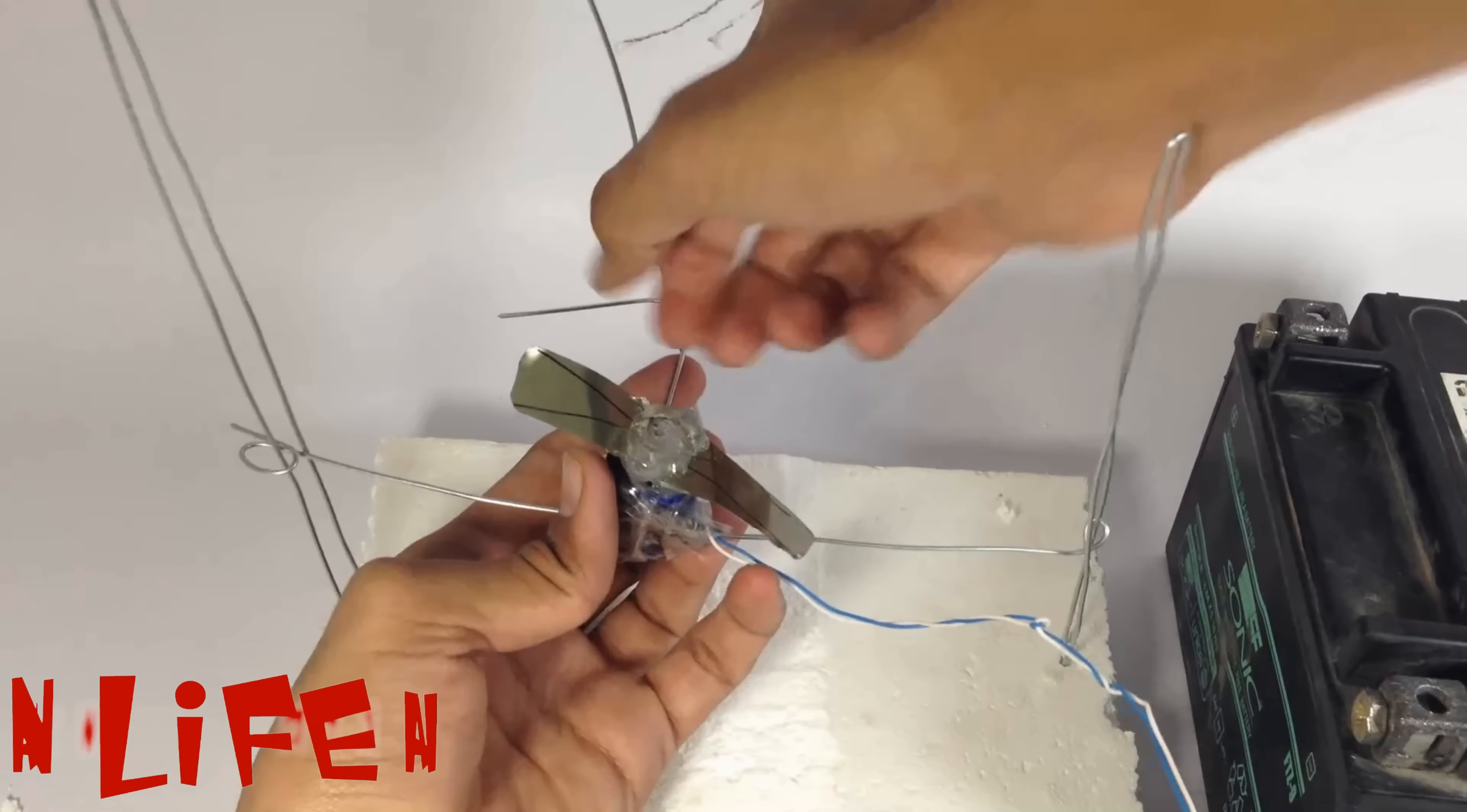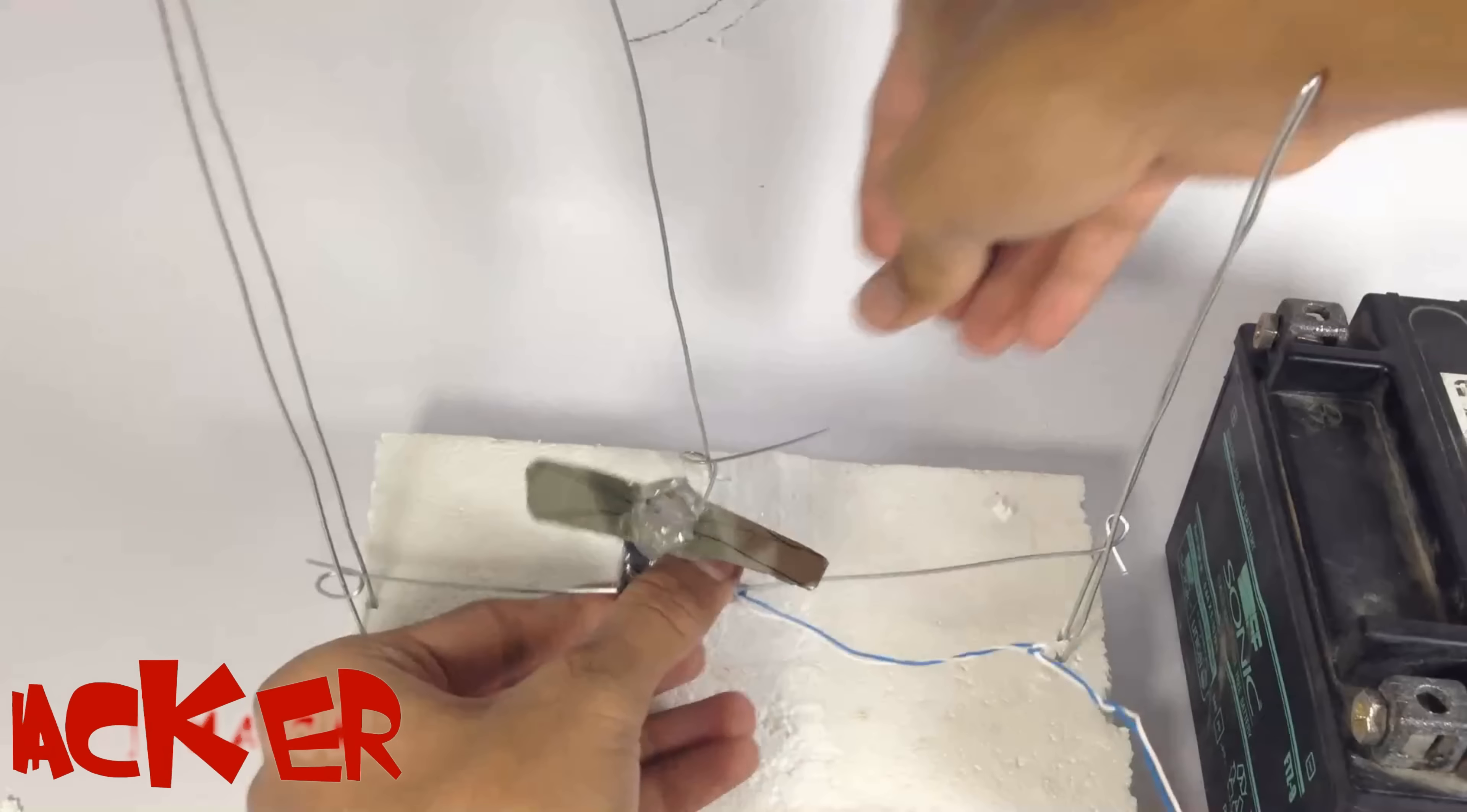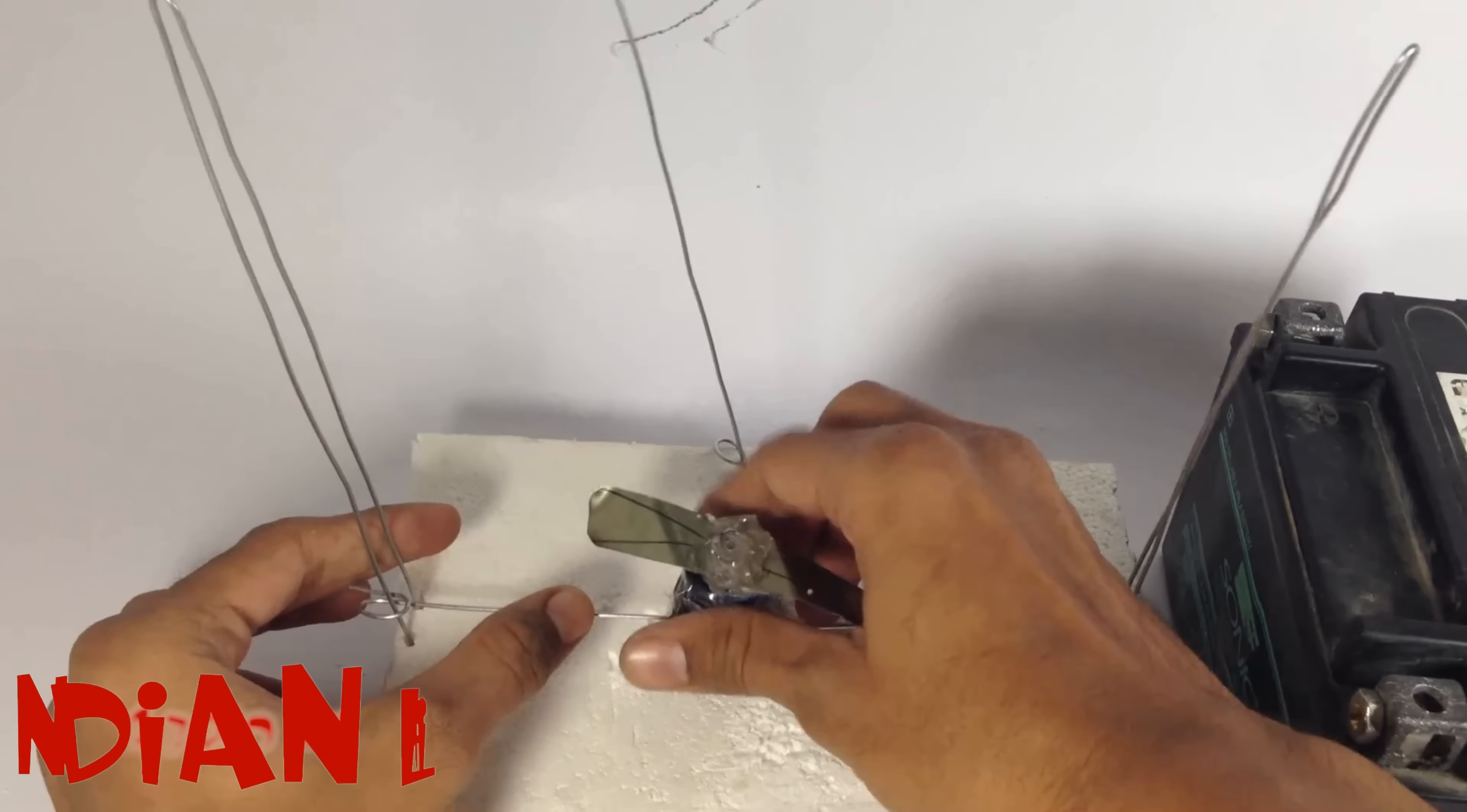Test 3 also failed. I need to put one other wire to control its other directions. So now let's go for test 4.